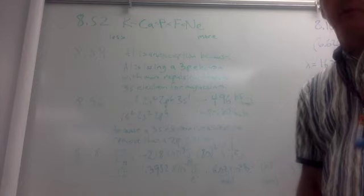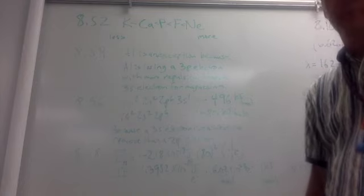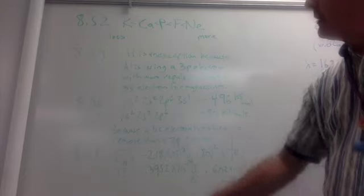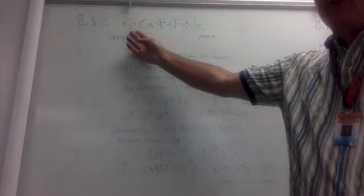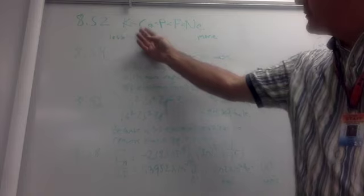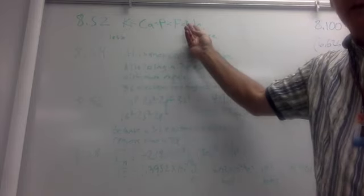We have our 1.B2 homework. It starts out with 8.52. We're given these five elements: potassium, calcium, phosphorus, fluorine, and neon.